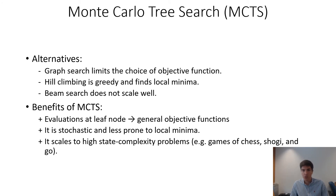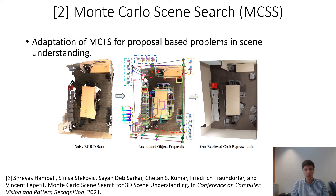We believe other search algorithms are only sub-optimal for our setting. In contrast to graph search, MCTS performs evaluations at leaf nodes, so we can apply very general objective functions. Hill climbing is greedy, while MCTS performs stochastic search, which helps to avoid local minima. In contrast to beam search, MCTS can be applied to high state complexity problems. In our previous work, we already applied MCTS to a large set of candidate objects and proposals to retrieve appealing CAD representations of input RGBD scans, and we believe the quality of optimal proposals could be further refined using insights from our new work.